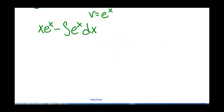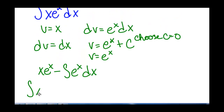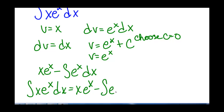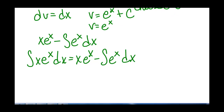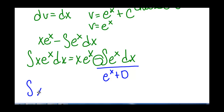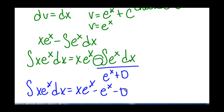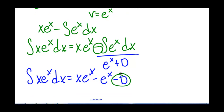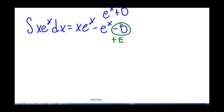Plugging into the integration by parts formula, we have the integral of x e to the x dx equals x times e to the x minus the integral of e to the x dx. Solving that integral gives e to the x plus some constant d. So the integral of x e to the x dx equals x e to the x minus e to the x, and that minus d is still a constant, which we'll call plus constant e.